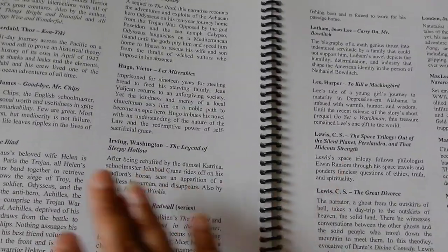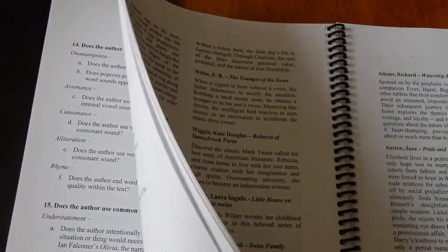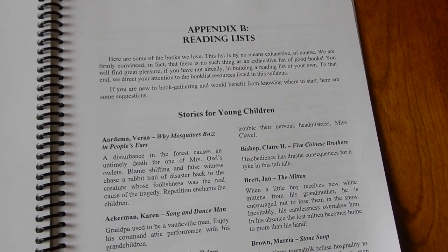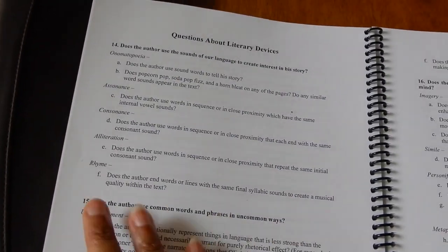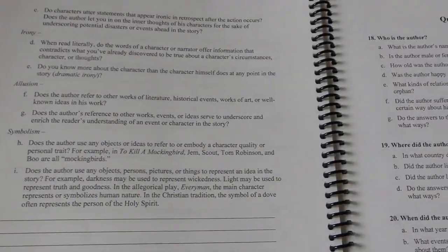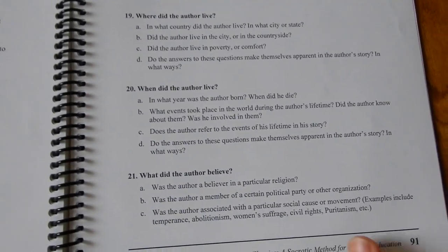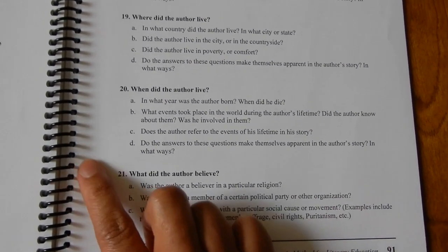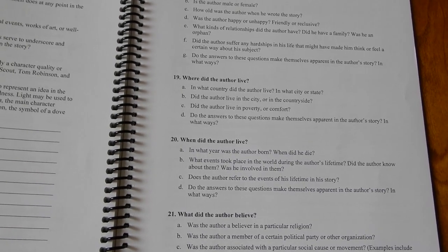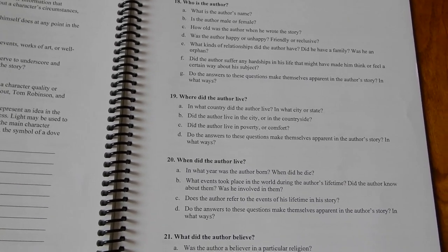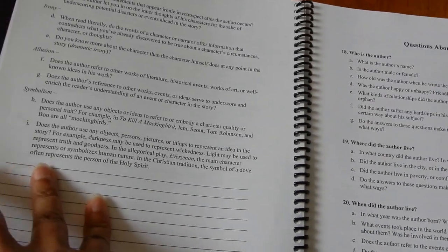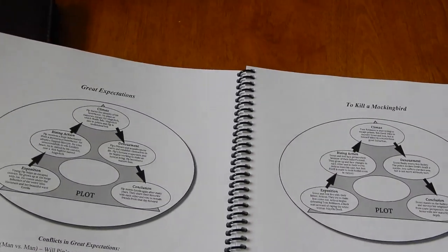I hope this helps — if not, let me know and I'll try to do a more focused video. There are 21 questions throughout the entire list of categories, and within each question you have sub-questions. They always start with children's literature.